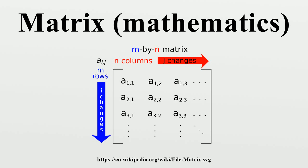The product of two transformation matrices is a matrix that represents the composition of two linear transformations. Another application of matrices is in the solution of systems of linear equations. If the matrix is square, it is possible to deduce some of its properties by computing its determinant. For example, a square matrix has an inverse if and only if its determinant is not zero. Insight into the geometry of a linear transformation is obtainable from the matrix's eigenvalues and eigenvectors.